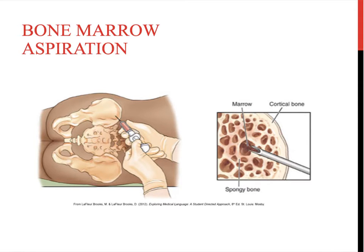Prep your patient by explaining the procedure. You'll stay with them and guide them during the process, and a friend or family member can also be present if they choose. The patient will typically feel a brief sensation of painful pulling when the marrow is aspirated. They'll be positioned on their side and prepped accordingly. The procedure lasts about 5 to 15 minutes. Sometimes a mild sedative like Valium is given if the patient is very anxious. The site is swabbed, disinfected, and after aspiration, a dressing is applied.